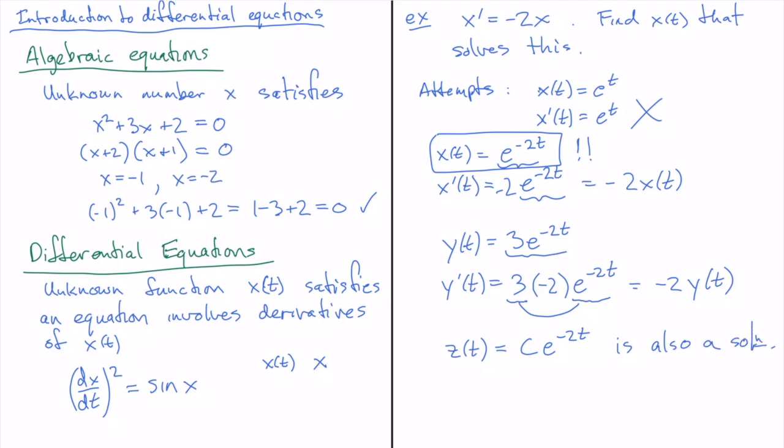z of t equal any number c times e to the minus 2t is also a solution. Okay, so, and this is very similar. Wrapped up in any method that we'll go through for solving an equation like this, there's some step that involves an antiderivative. Normally, if we had an antiderivative of a function, you would have a plus c pop out along the way, but because of the way the method would work, in the end, that plus c ends up being a multiplicative constant in front of the solution. And when I go through some of those methods, you'll see what I mean, but this c is really very closely related to the plus c that you should be familiar with from antiderivatives.